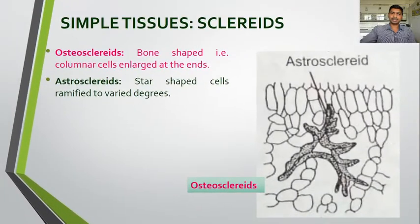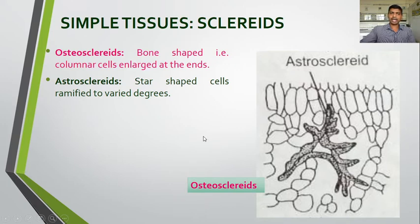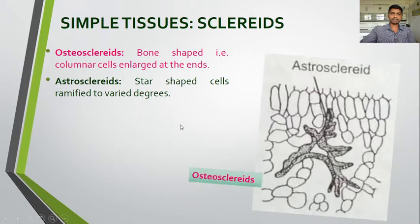Then osteosclerides — 'osteo' is concerned with bone, so the cells are bone-shaped; here we can see these bone-shaped cells, that is columnar cells enlarged at the ends. Astrosclerides — 'astro' is concerned with star shape, ramified to varied degrees. Here we can see the astrosclerides which are star-shaped.